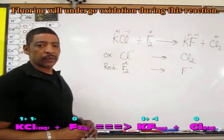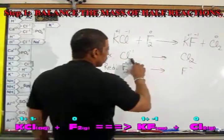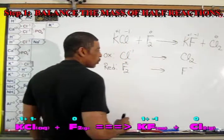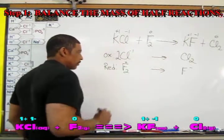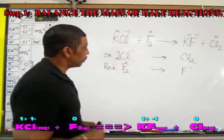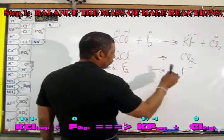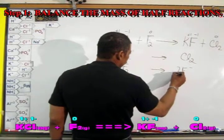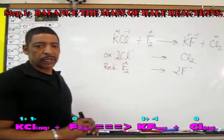The first step is to balance the mass. One chloride produces a diatomic chlorine molecule, so a 2 must be placed in front of the chloride. For the fluorine, which is diatomic, producing fluoride, we place a 2 in front of the fluoride.